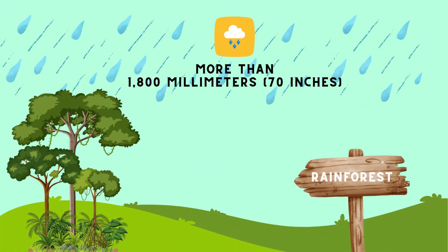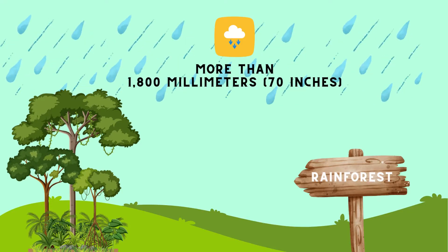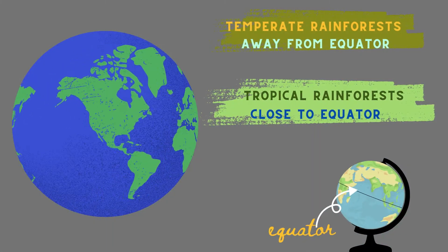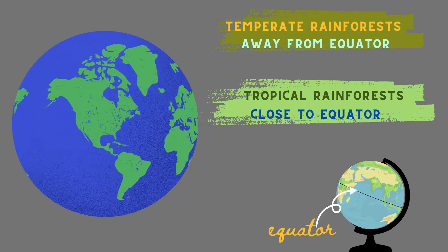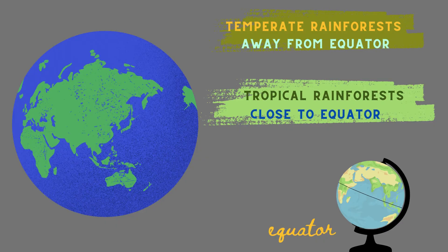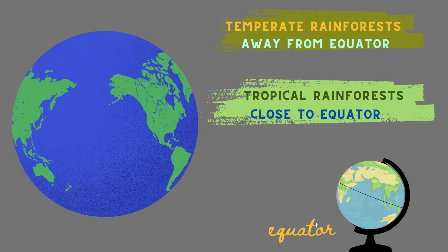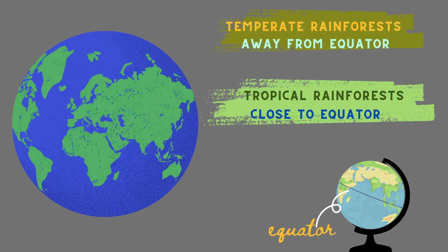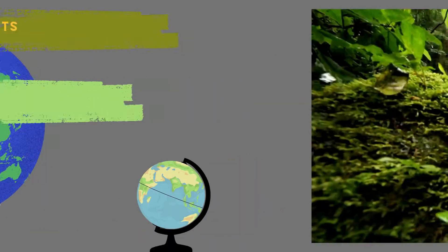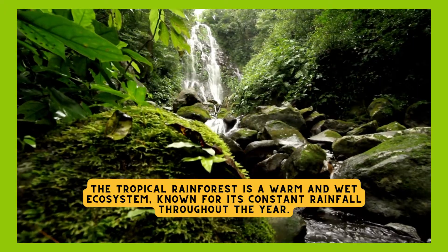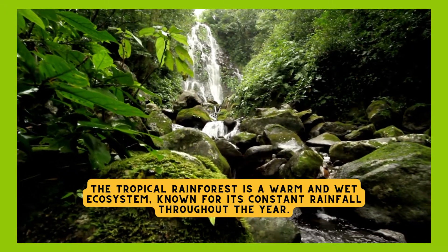Rainforests are most commonly found in areas that get significant levels of yearly precipitation. Nearer to the Earth's equator, when the climate is warmer, you'll find tropical rainforests. Nearer to the colder coastal locations that are further north or south of the equator are where you'll find temperate rainforests. The tropical rainforest is a warm and wet ecosystem, known for its constant rainfall throughout the year.